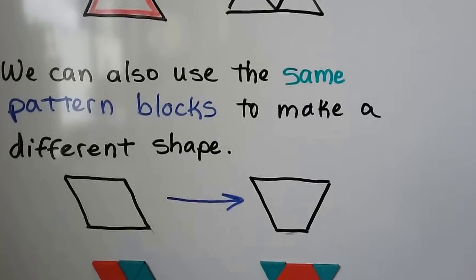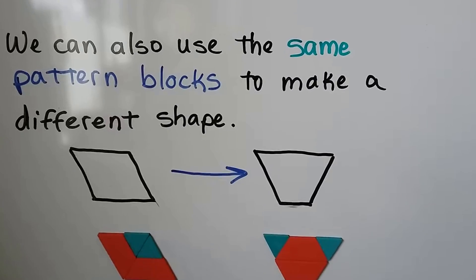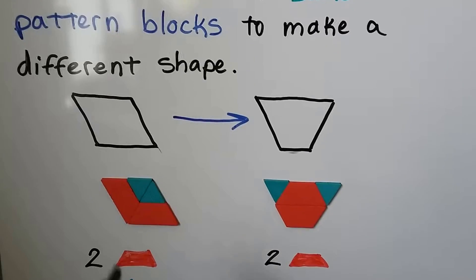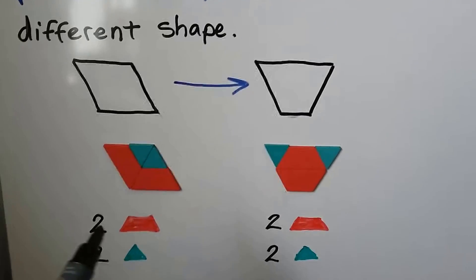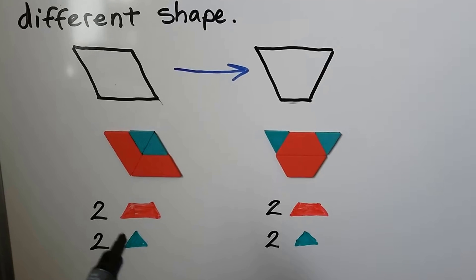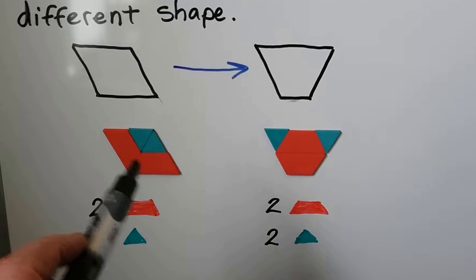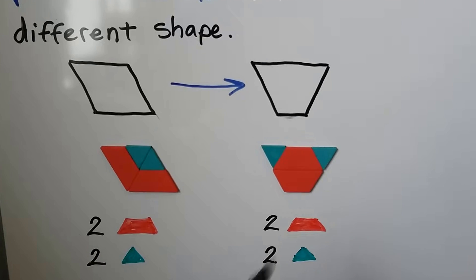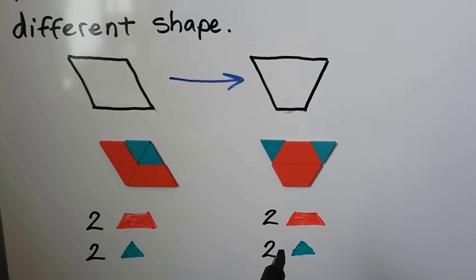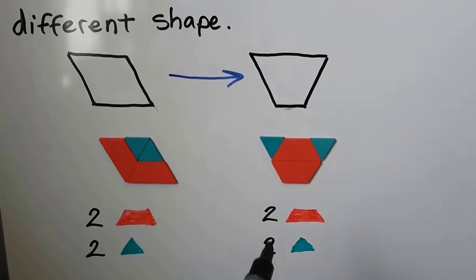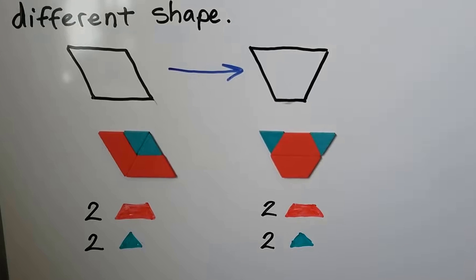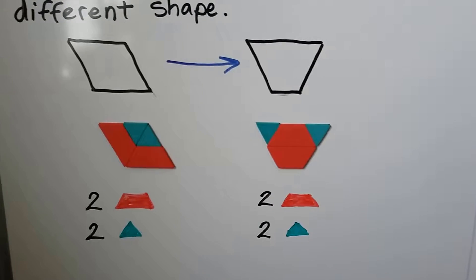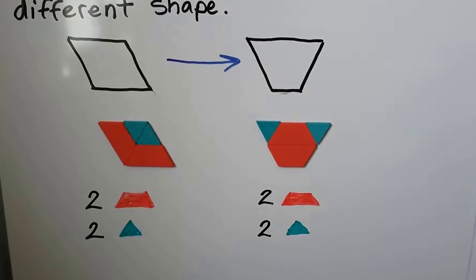We can also use the same pattern blocks to make different shapes. Here we've got a rhombus, and we used two trapezoids and two triangles. We can rearrange them and use the same number of pattern blocks to make a new shape. We have two trapezoids and two triangles — we made a new shape.